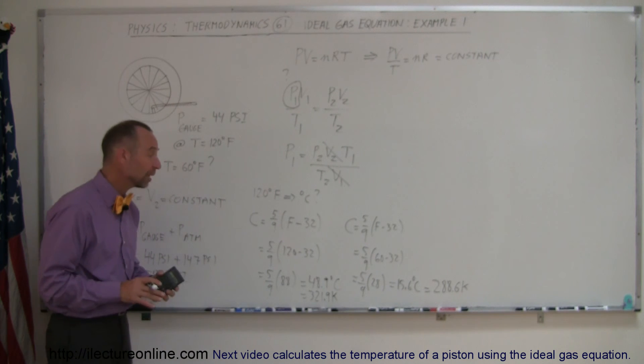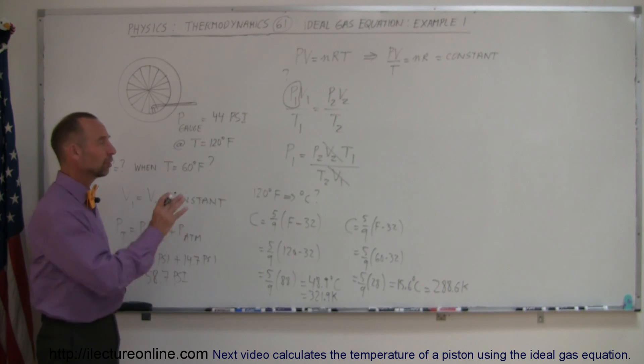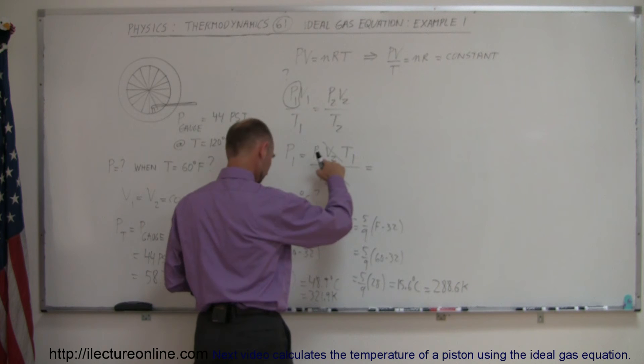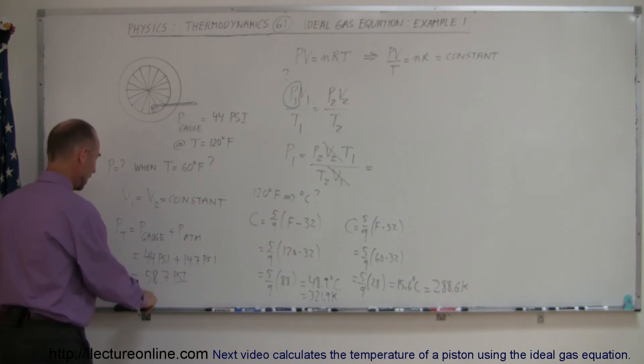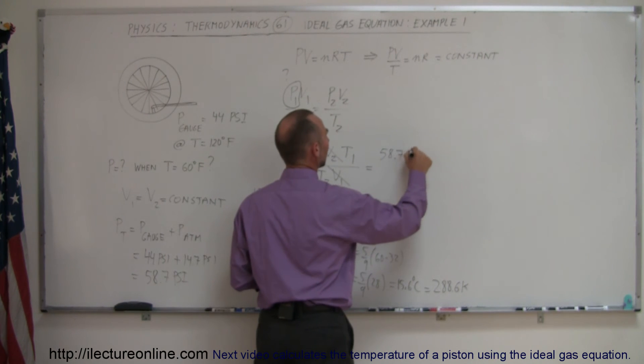Now we're ready to plug in the numbers in the equation. So pressure 2, that's something we got right here. The total final pressure is 58.7 psi. So 58.7 psi.